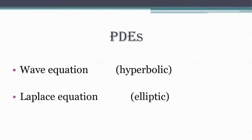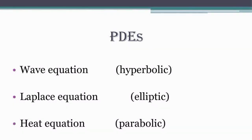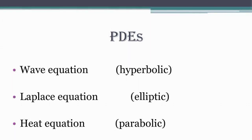Now I'd like to describe three fundamental examples of PDEs — partial differential equations. These are: first, the wave equation; second, the Laplace equation; and third, the heat equation. The reason for choosing these three examples is that each one describes a very different kind of physical phenomenon, and each one is a prototypical example for a large class of equations. The wave equation is prototypical for hyperbolic equations, the Laplace equation for elliptic equations, and the heat equation for parabolic equations.